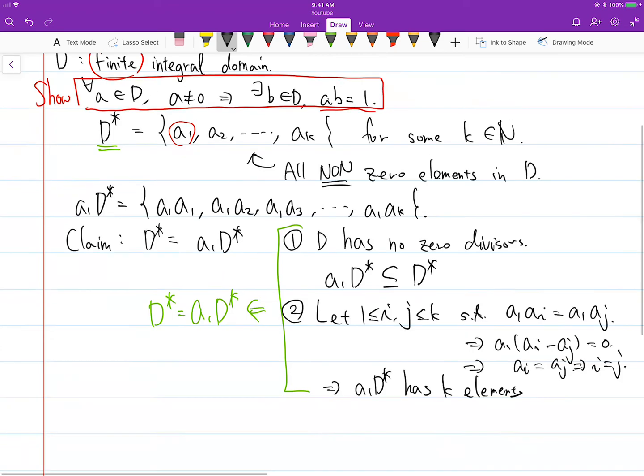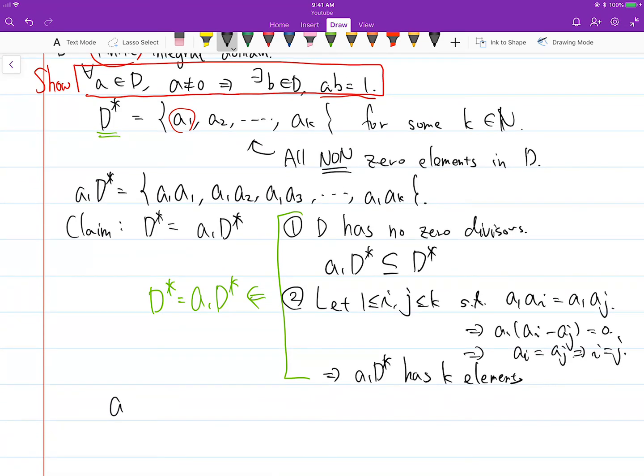Now the interesting thing is A1 is in D star, obviously, because that's how we picked A1. A1 is in D star, and D star is the same as A1 D star.